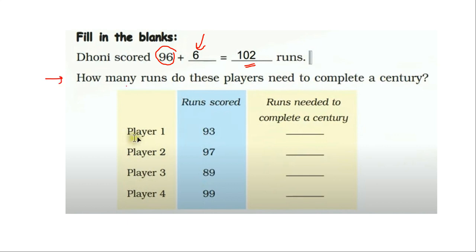Let's solve this question now. How many runs do these players need to complete a century? Keep in mind a century is 100. For player 1, 100 minus 93 is equal to 7. Player 1 needs 7 more runs to complete a century, that is 7 more runs to make this number 100. Hence the answer is 7.